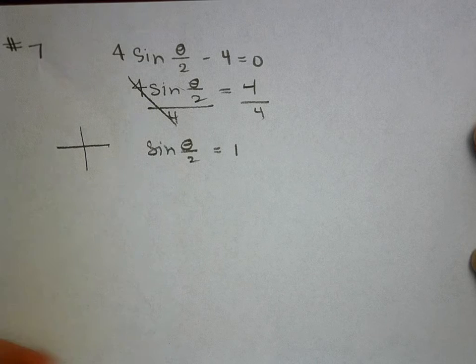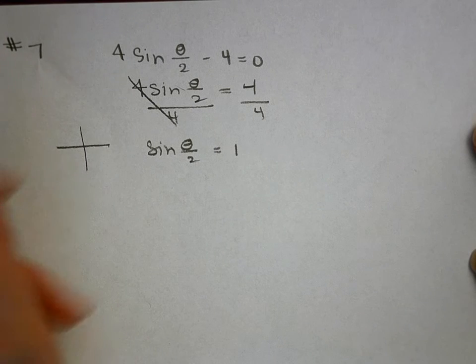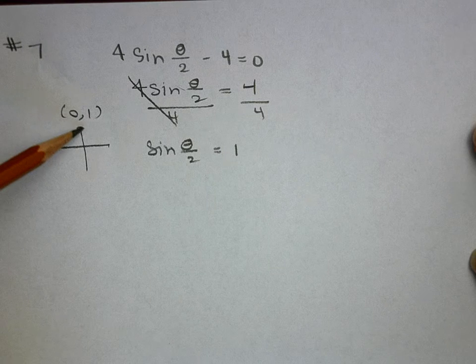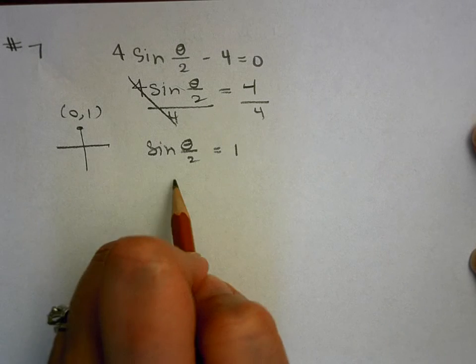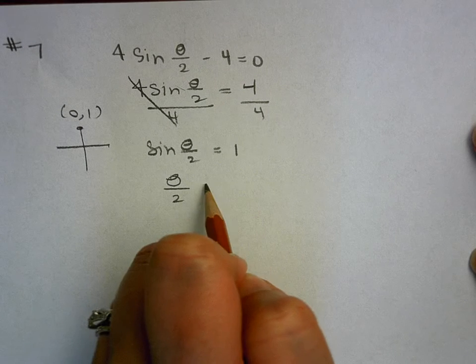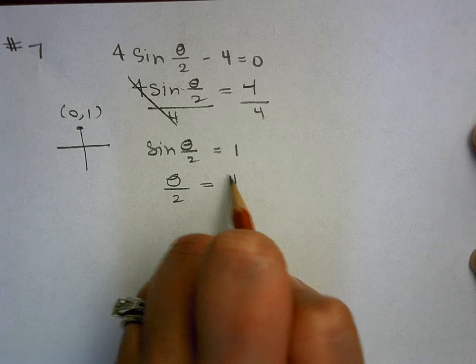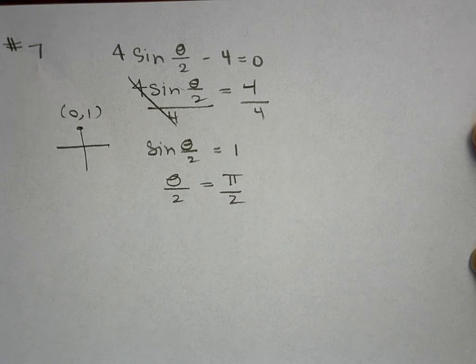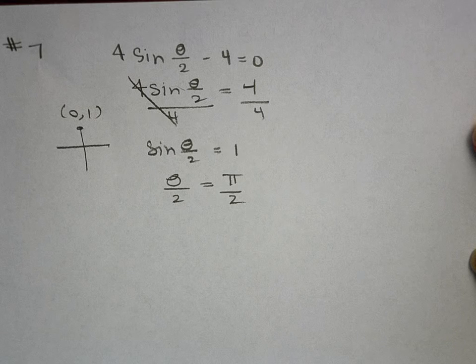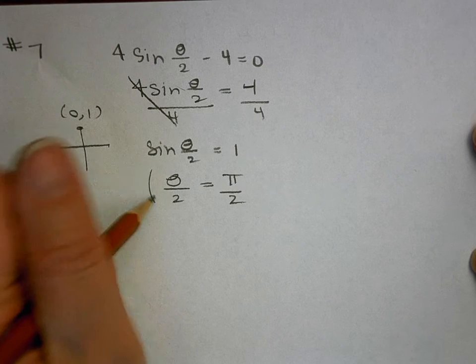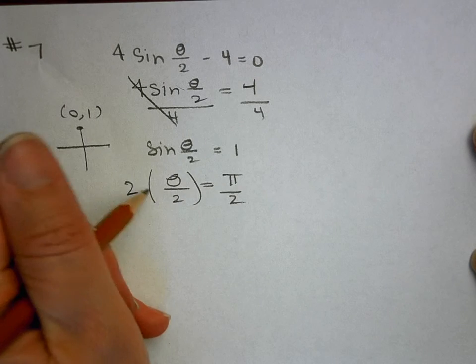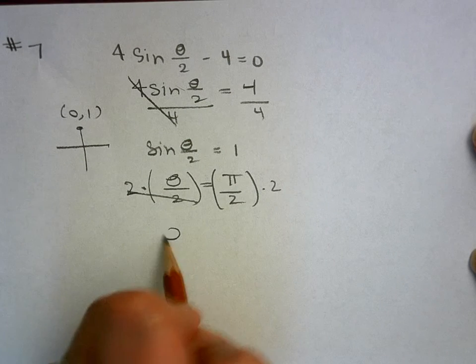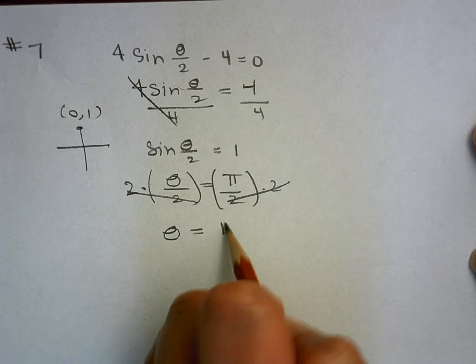So that's a quadrantal and I know sine is the y value. So the only place where y is equal to 1 is up here, so that would be at pi over 2. And so once I do that, then I want to just solve for theta. So in order to solve for theta, I'm going to just multiply both sides by 2, so then theta would equal pi.